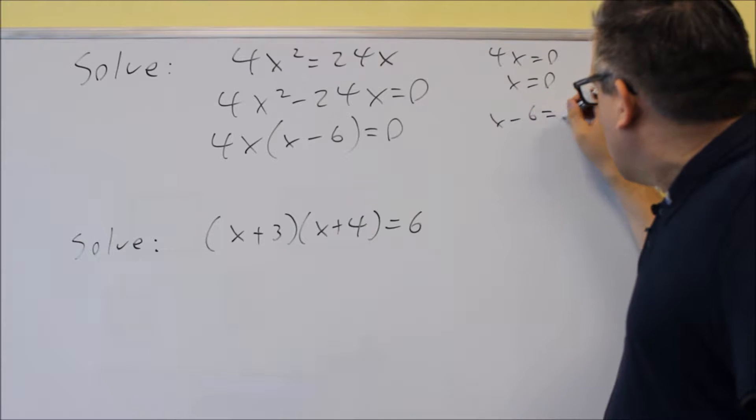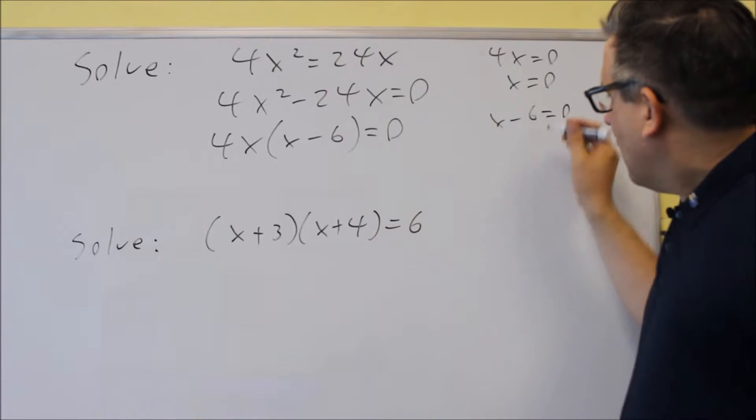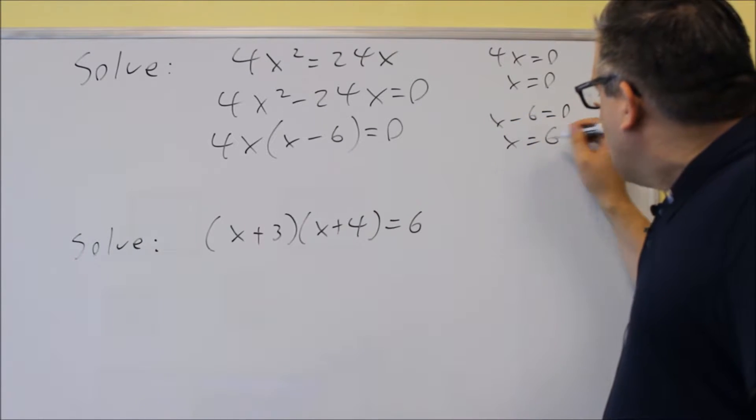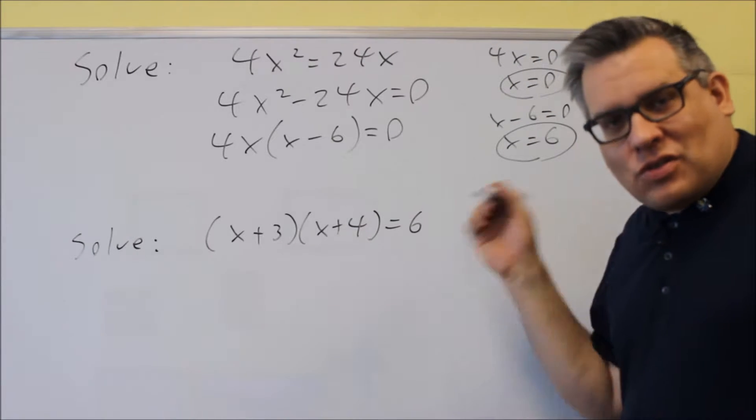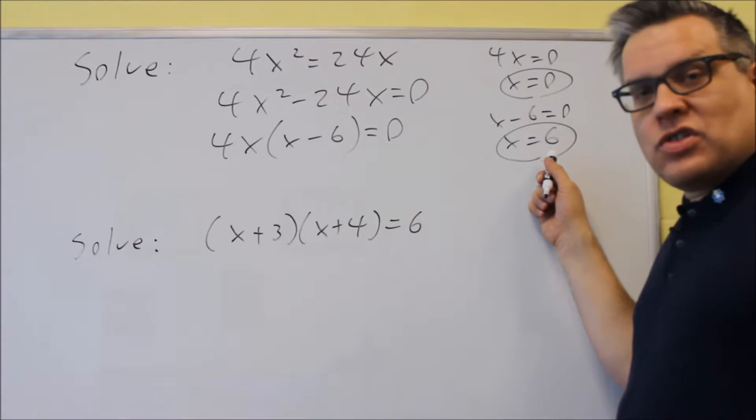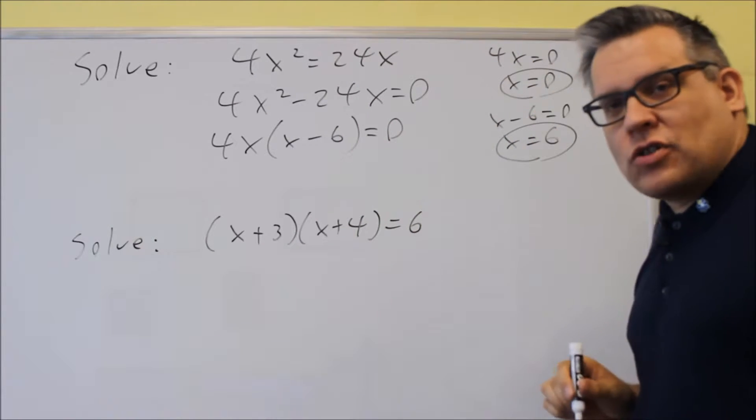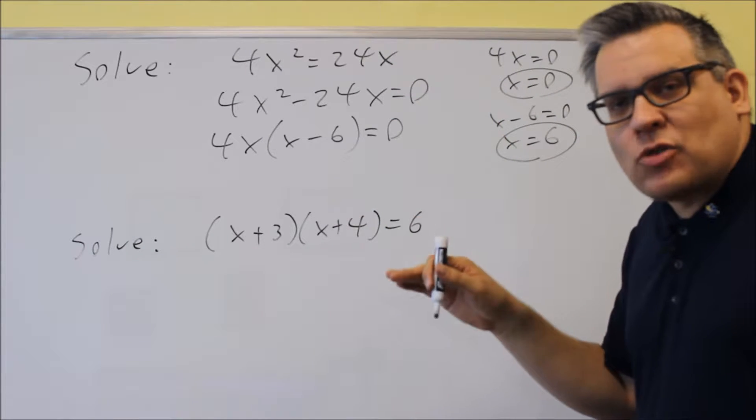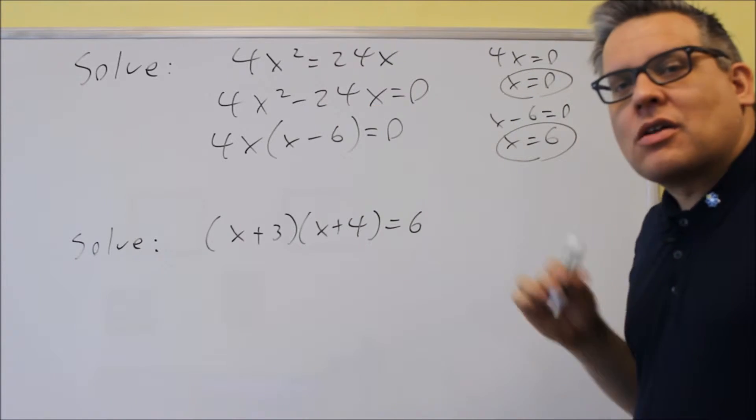Now the other one is x minus six, so I'm going to set that equal to zero, and then I end up getting six as the answer. So I get two answers here, I get zero and six. So notice if I would have divided both sides by x, I would have gotten the answer of six, but I wouldn't have gotten the answer for zero. So don't divide both sides by x, make sure you subtract, set it equal to zero.